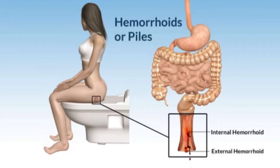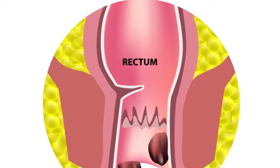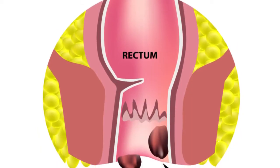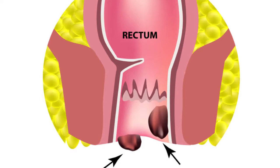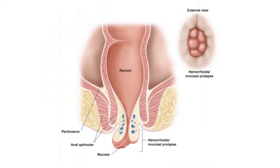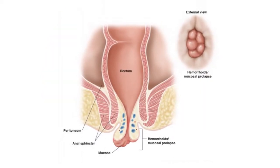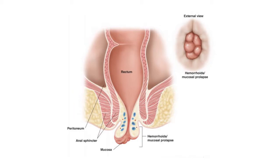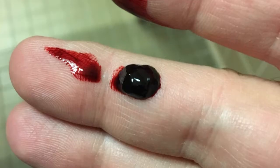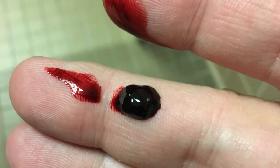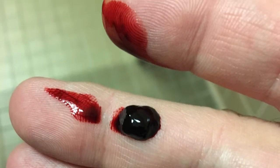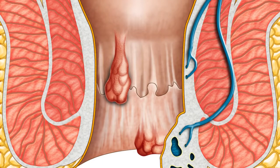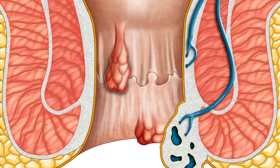Third-degree hemorrhoids prolapse and must be pushed back in by a finger. Fourth-degree hemorrhoids prolapse and cannot be pushed back into the anal canal. Fourth-degree hemorrhoids also include hemorrhoids that are thrombosed — containing blood clots — or that pull much of the lining of the rectum through the anus.